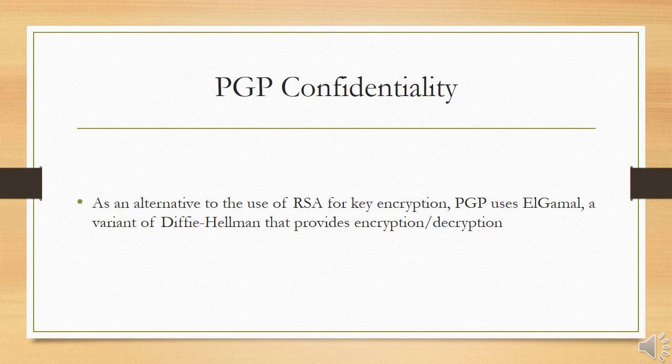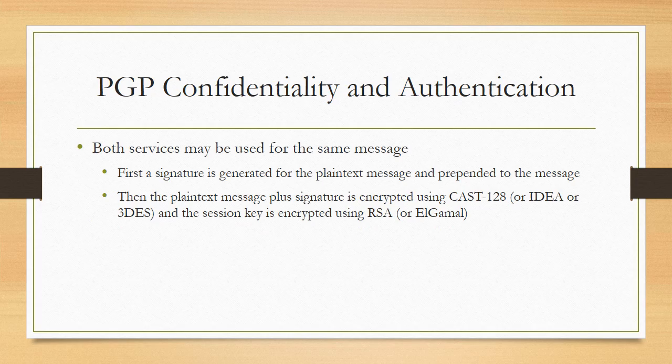Finally, the use of one-time symmetric keys strengthens what is already a strong symmetric encryption approach. Only a small amount of plaintext is encrypted with each key, and there is no relationship among the keys. Thus, to the extent that the public key encryption algorithm is secure, the entire scheme is secure. PGP provides the user with a range of key size options from 768 to 3072 bits; the DSS key for signatures is limited to 1024 bits.